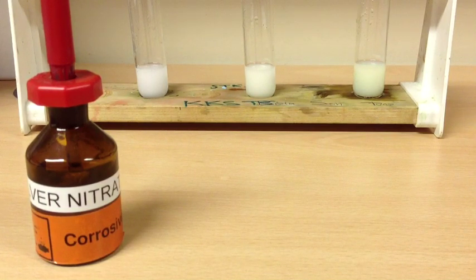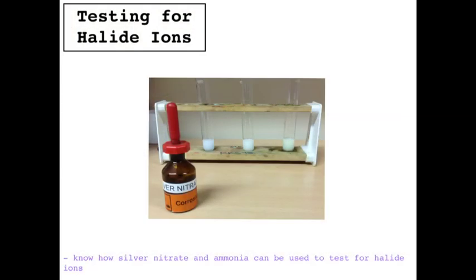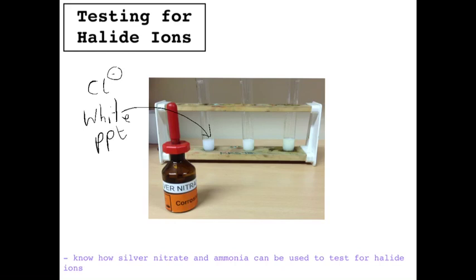This is a screenshot from the experiment video. You can see that silver nitrate is used, and when it's added to the three solutions, three different precipitates are made. This one had the chloride ions in it, and you can see that it makes a white precipitate — that white precipitate was silver chloride.